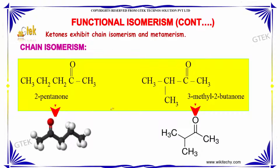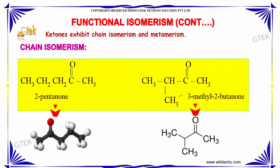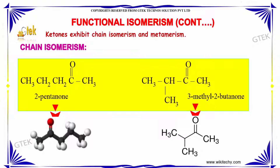Ketones exhibit chain isomerism and metamerism. For chain isomerism, 2-pentanol and 3-methylbutanol show chain isomerism, as we can see here. They both have 1, 2, 3, 4, and 5 carbon atoms respectively, and they have the same molecular formula.